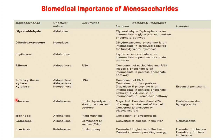Now we will see the biomedical importance of monosaccharides. First, glyceraldehyde — it is an example of aldo-triose and is present as an intermediate in glycolysis and in the pentose phosphate pathway in the form of glyceraldehyde 3-phosphate. Second, dihydroxyacetone — it is an example of keto-triose and is also present as an intermediate in glycolysis in the form of dihydroxyacetone phosphate.